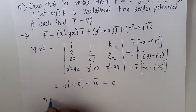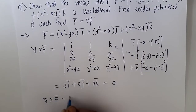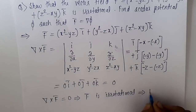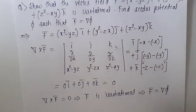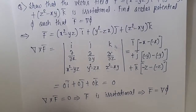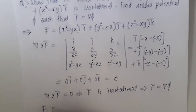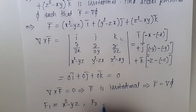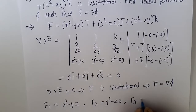So we get del cross f equals 0, which means f is irrotational. And if f is irrotational we can write f equals gradient of φ. Now we want φ. So f1 equals x² - yz, f2 equals y² - zx, and f3 equals z² - xy.